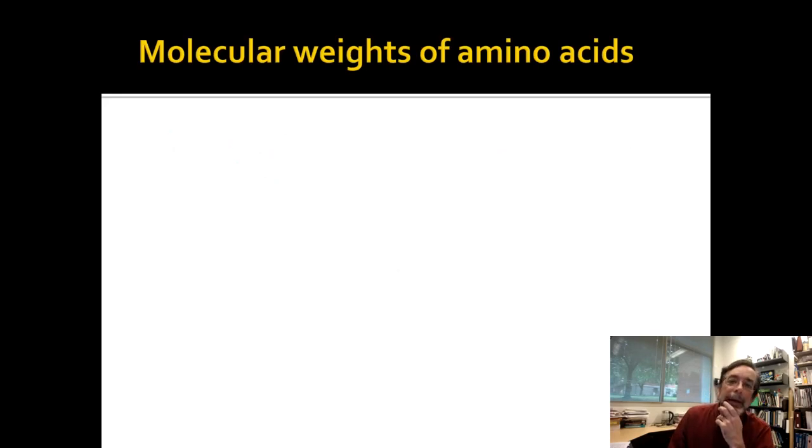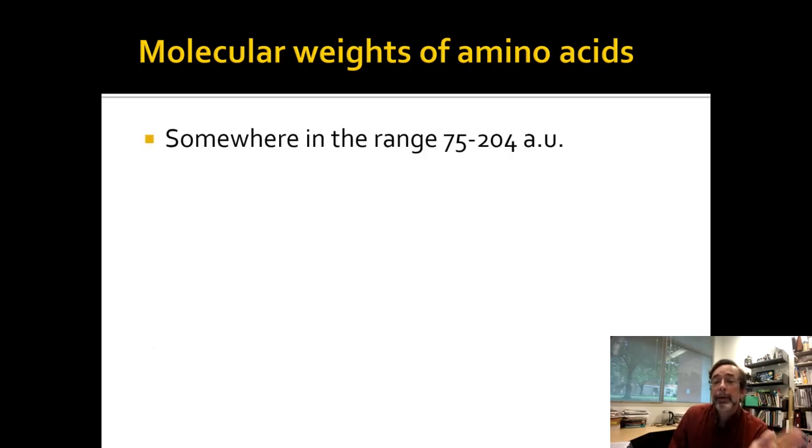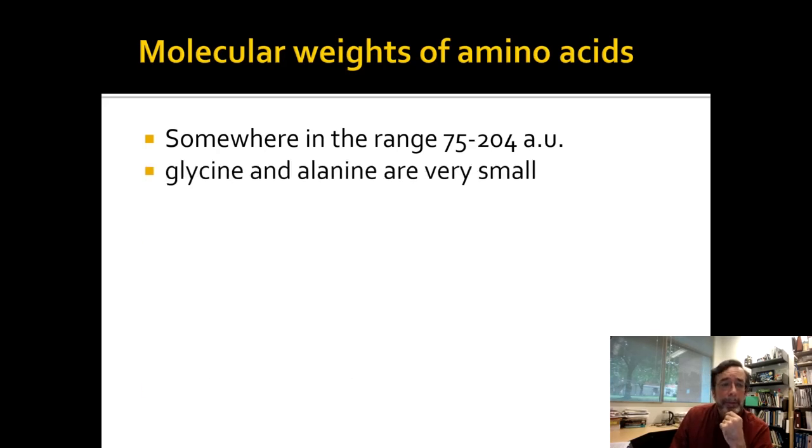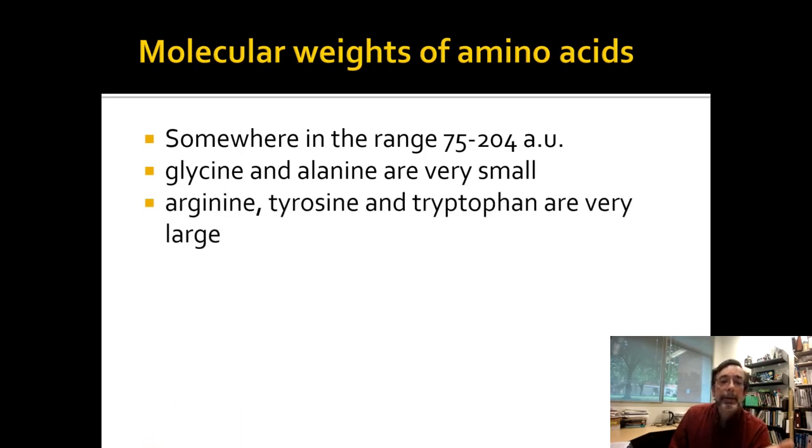So notice that you can also get a feeling for how big or small amino acids are. This is important chemically. There's a range of 75 to a little above 200 in terms of atomic units, grams per mole. Glycine and alanine, 75 must be glycine. Alanine is around 100. Most of the rest, arginine, tyrosine, and tryptophan are around 200. They're way at the other end of the scale. All of the rest are between 100 and 150. So you see you have sort of a bell distribution. It's not a perfect distribution, but with only 20 units, it wouldn't be perfect.